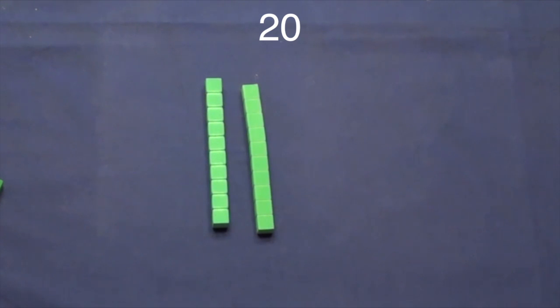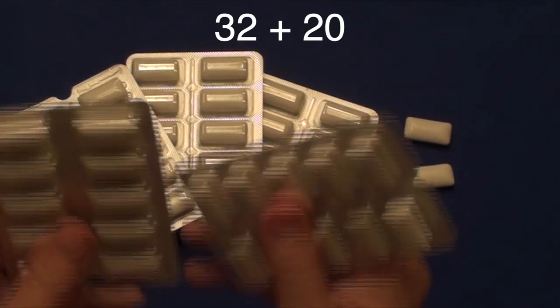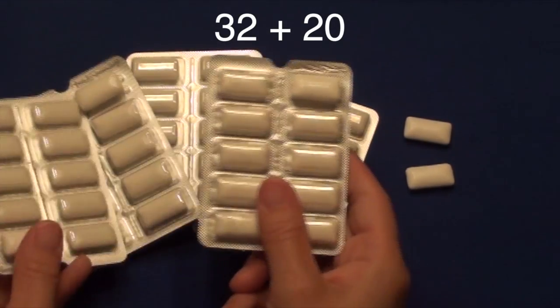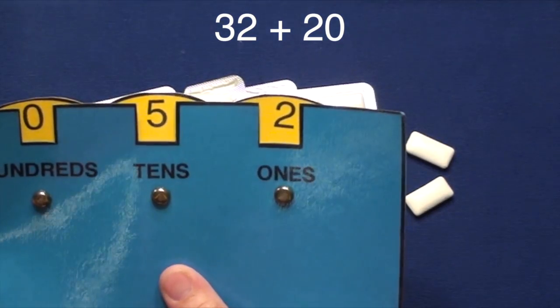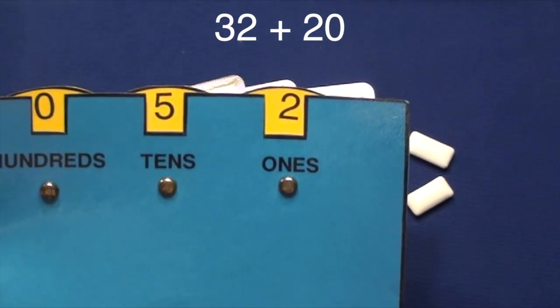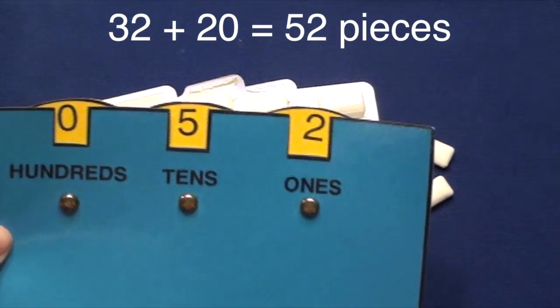The number 20 is equal to 2 tens. So when you add 32 pieces plus 20 pieces, you add 2 to the tens column. 3 tens plus 2 tens equals 5 tens. 52 pieces of gum.